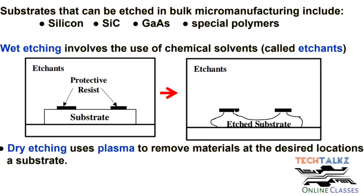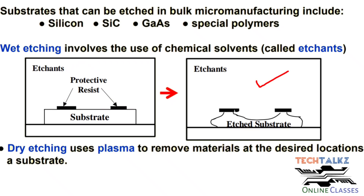Now, the Wet Etching Process. In Isotropic Etching, we protect certain portions using a mask and a protecting resist. The etching solvent acts on the exposed area. In this process, etching occurs in every direction, so we don't get a perfectly shaped result.